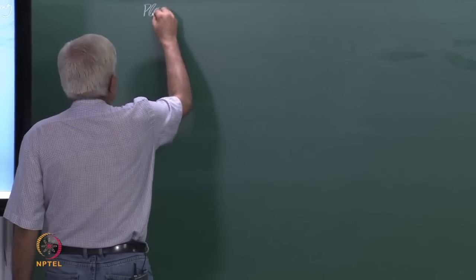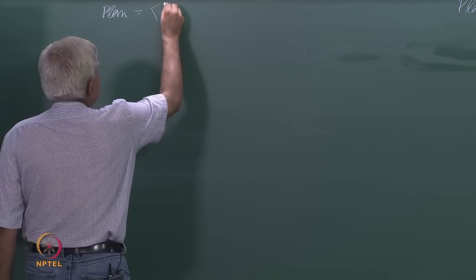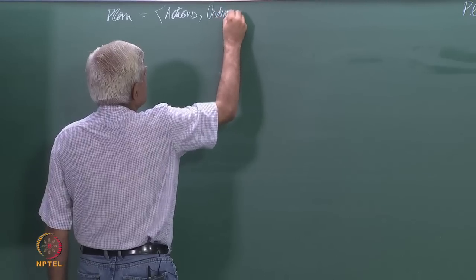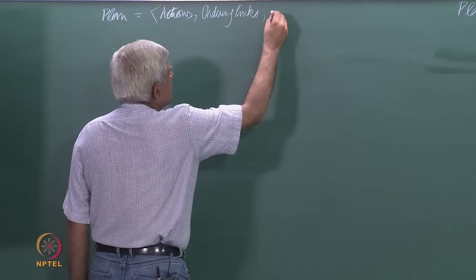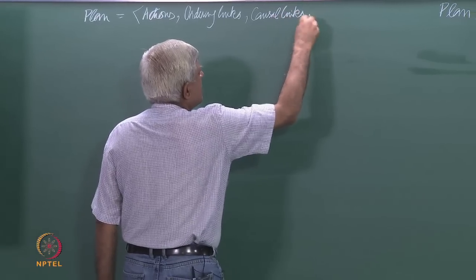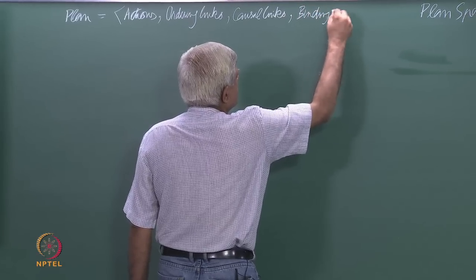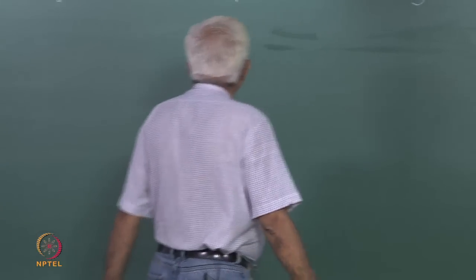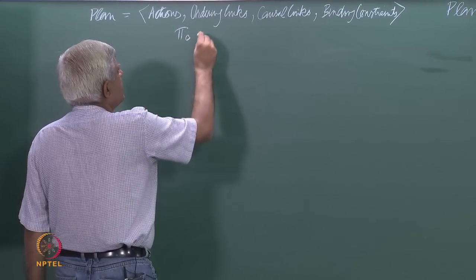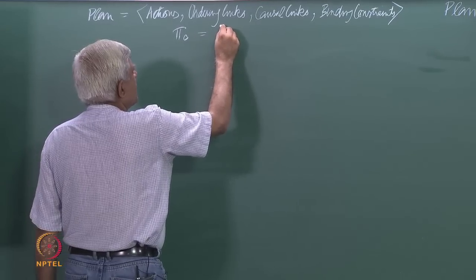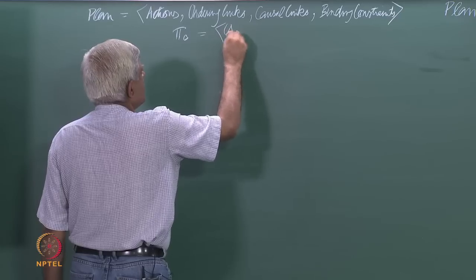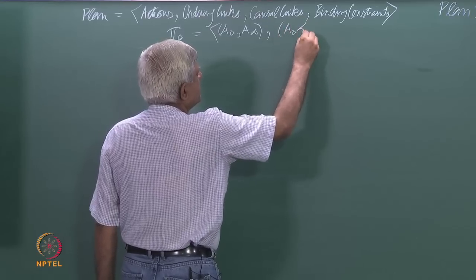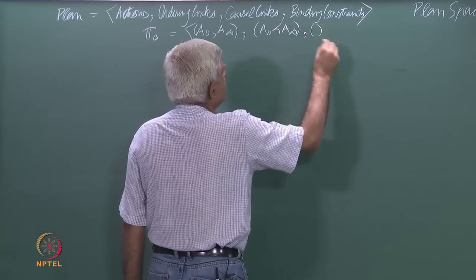A plan is represented as a four-tuple: the first component is actions or operators with variables inside them, then ordering links, then causal links, and then binding constraints. The initial plan π₀ is made up of two actions a₀ and a∞, has one ordering link saying a₀ happens before a∞, and has no binding constraints and no causal links.